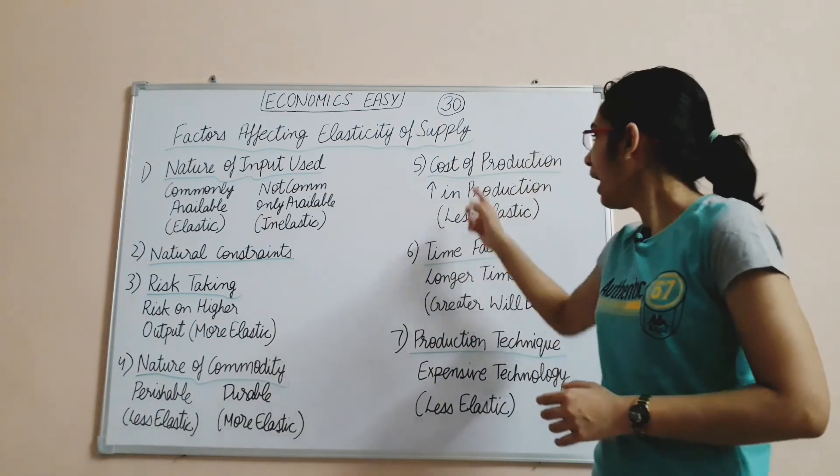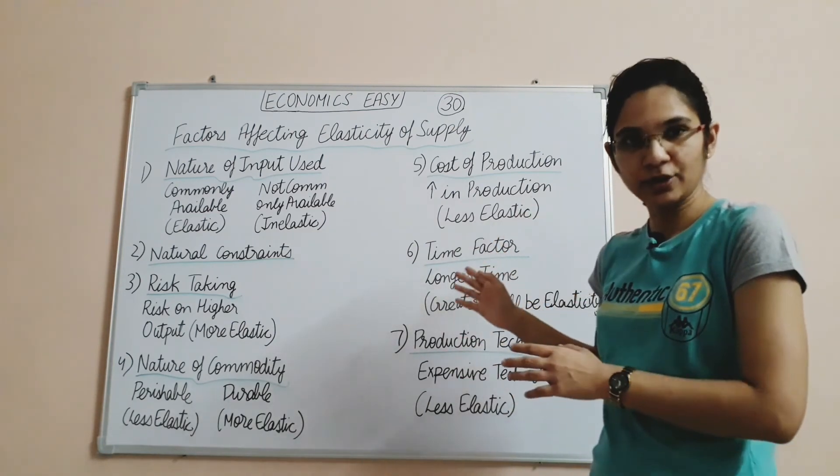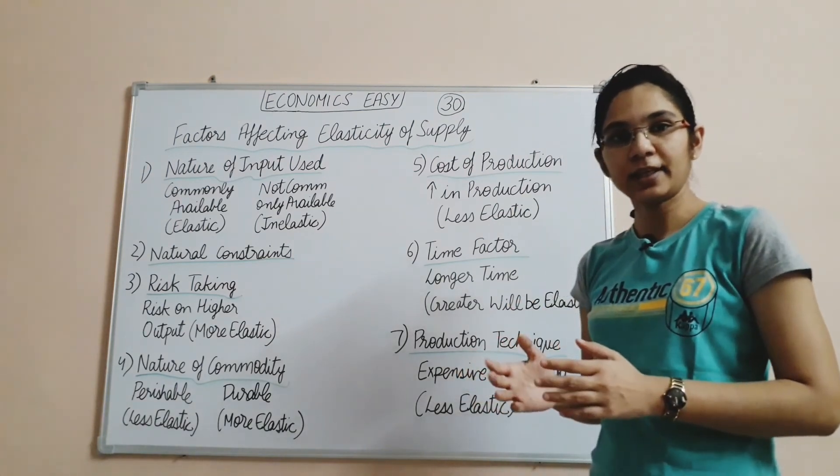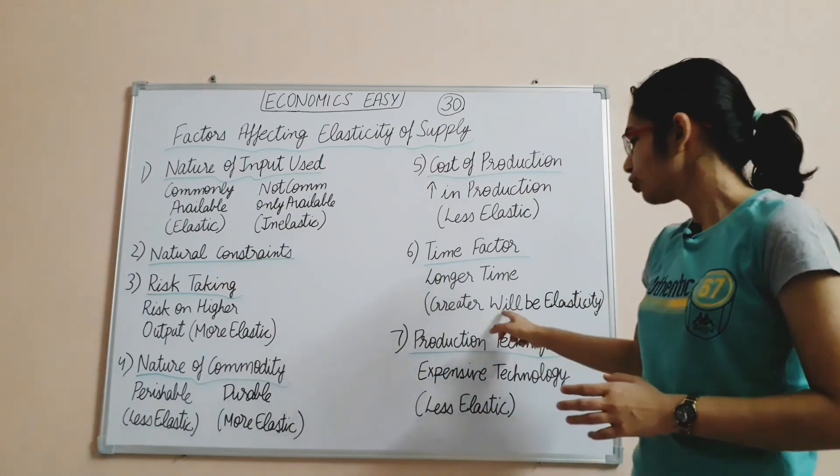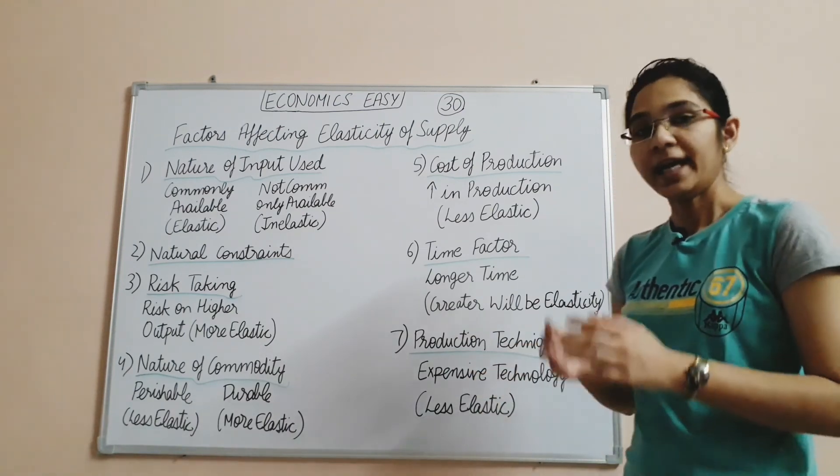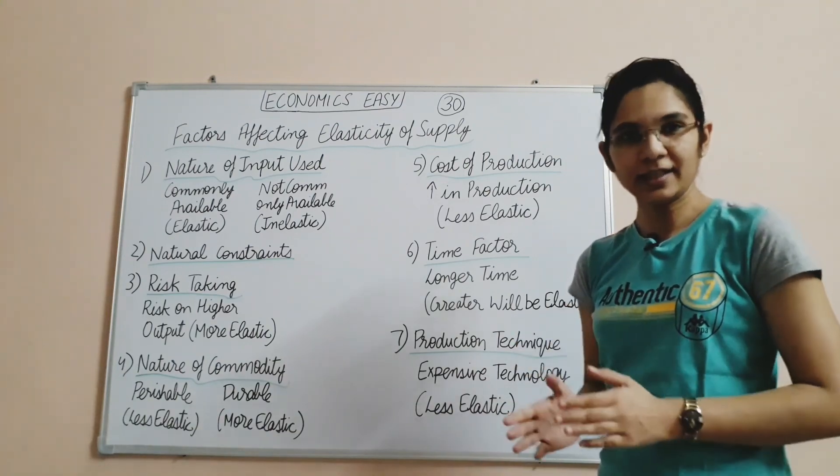Factor 5: Cost of Production. If production costs increase, elasticity is less elastic. Factor 6: Time Factor. If a producer gets more time to produce, then elasticity will increase. And the last is production technique. Expensive and complex techniques result in less elastic supply.